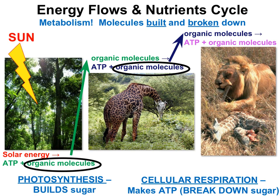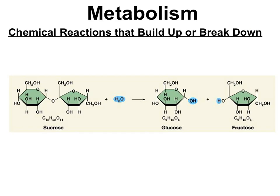Consumers, like this giraffe and this lion over here, are heterotrophs and they eat other organisms to get their energy and nutrients. Metabolism plays a role here when compounds that are eaten are broken down by metabolic processes to release energy and release the nutrients. And then the nutrients that are released by these metabolic reactions can be built up by other metabolic reactions into new molecules.